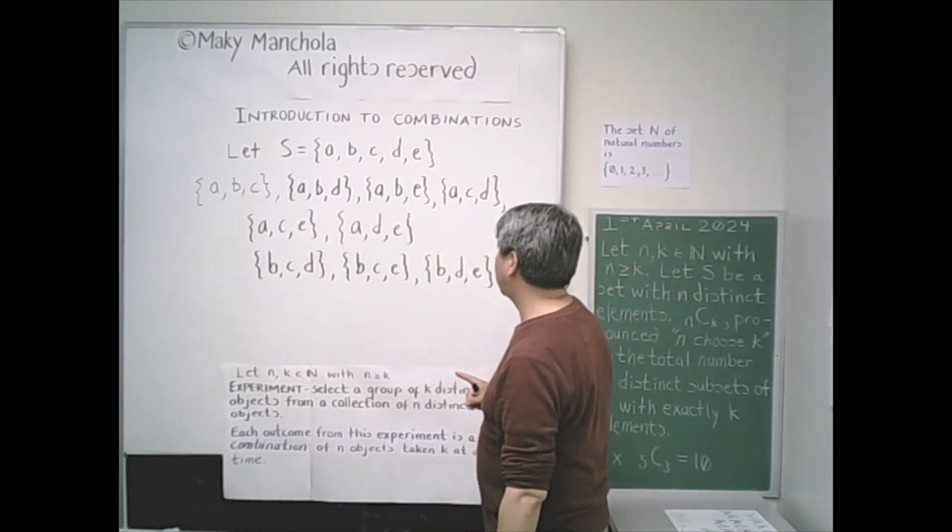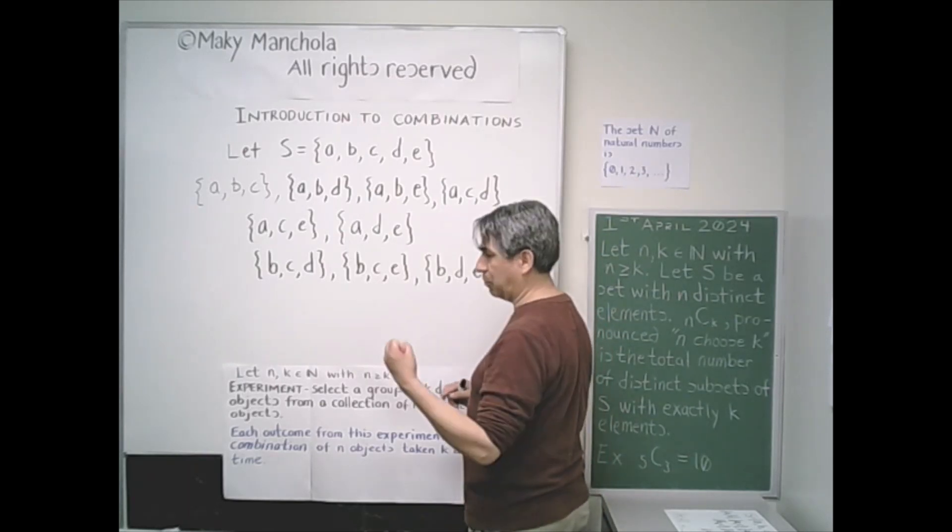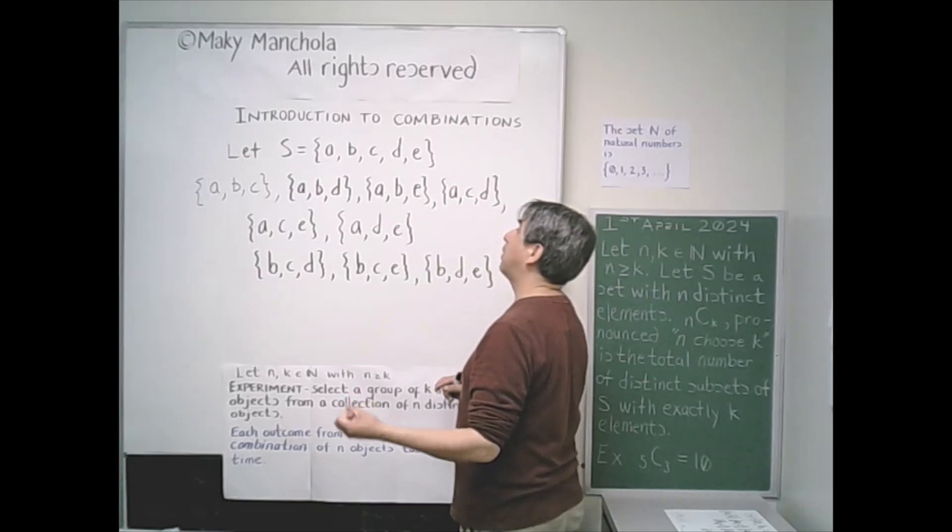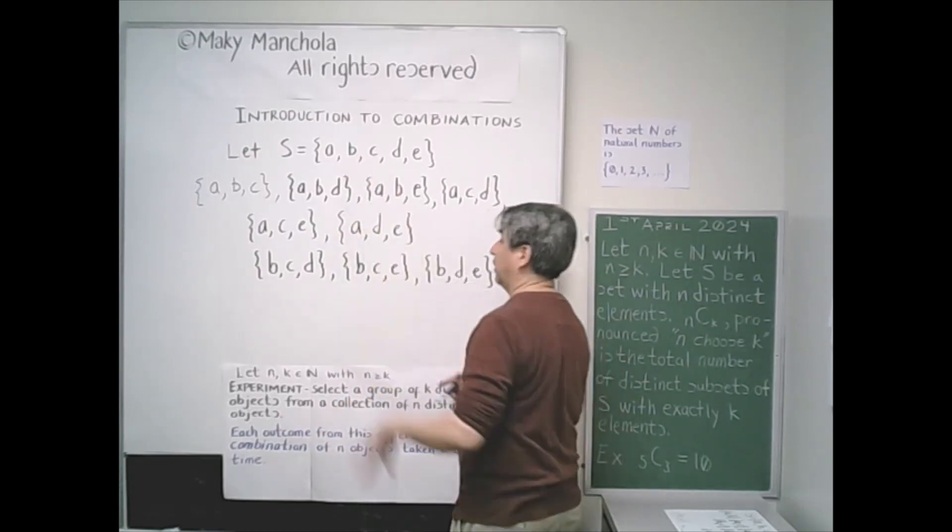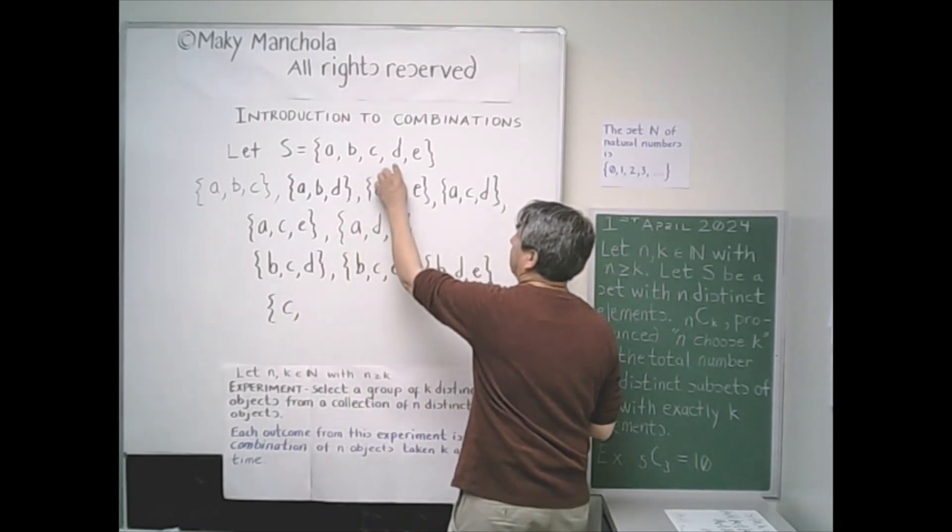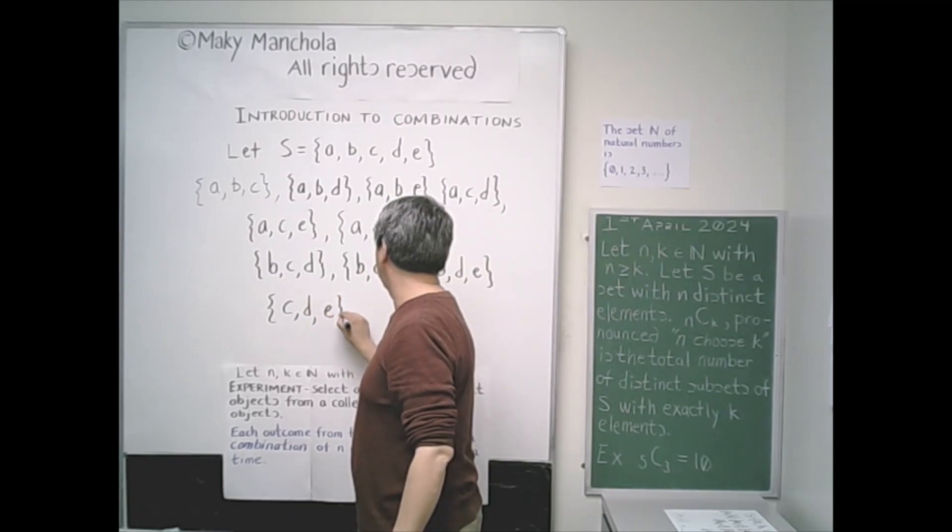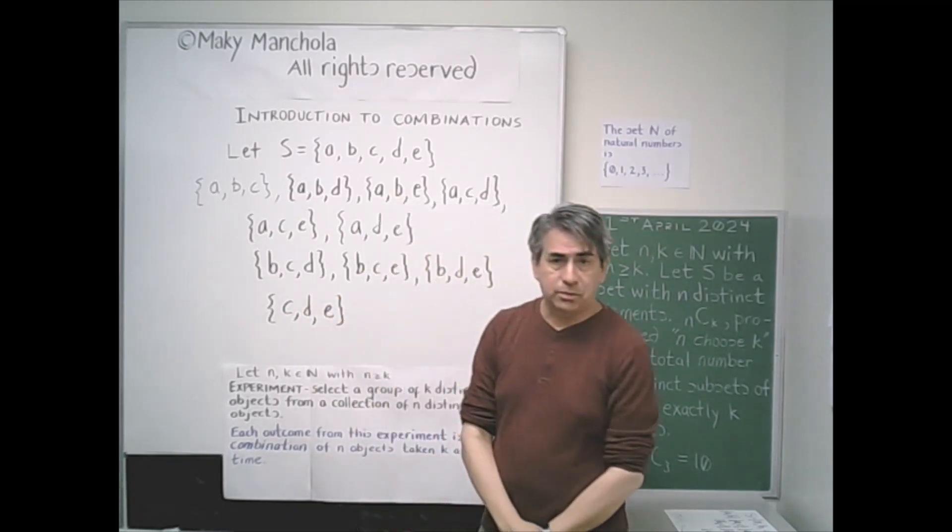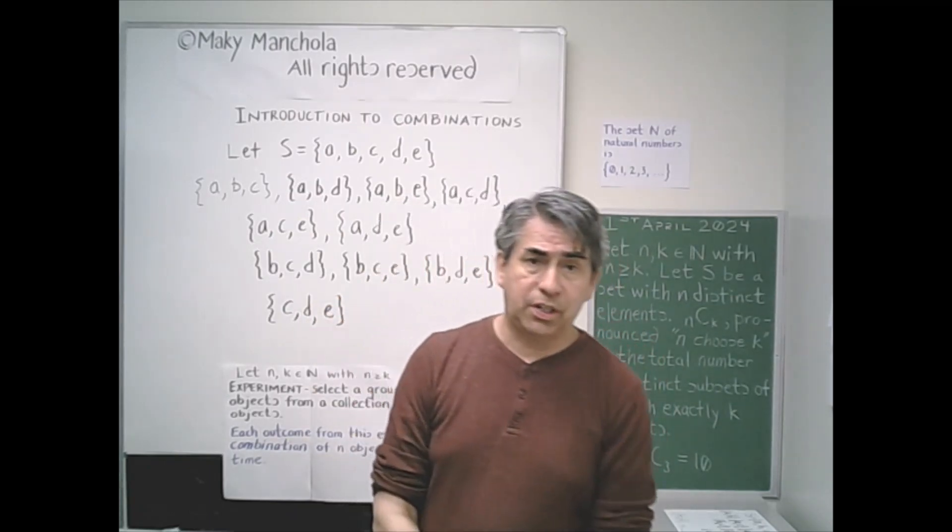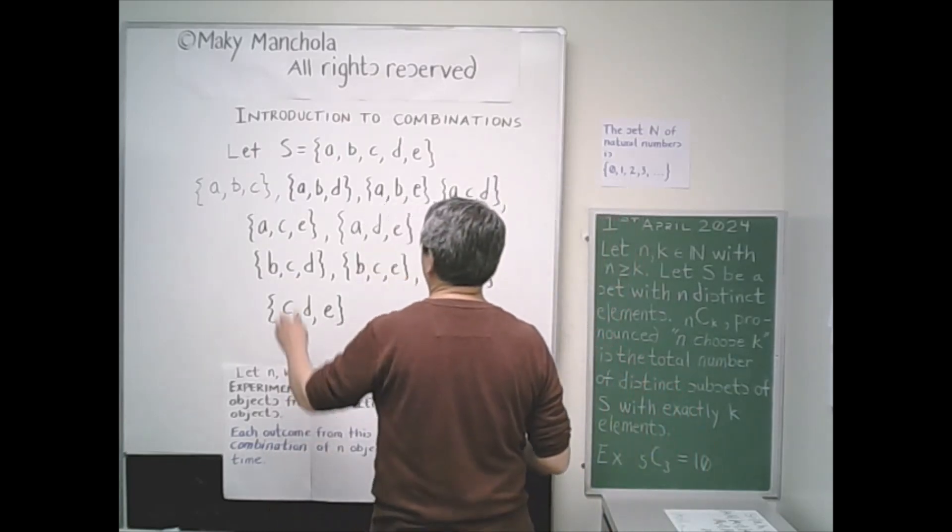Let's continue. Next we want to list three element subsets of S that begin with C. So I only see one right here, CDE. Okay, so these are all three element subsets of our set S. How many of them are there?